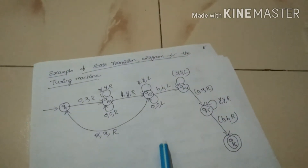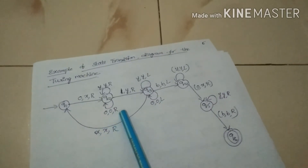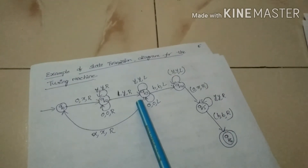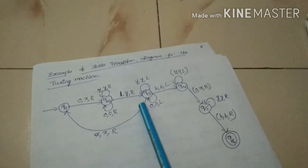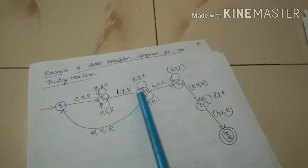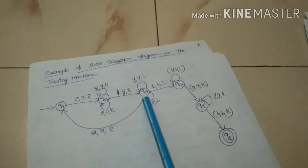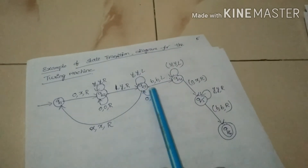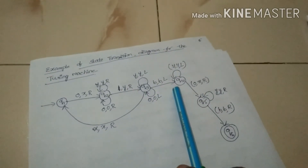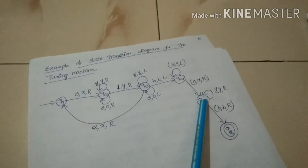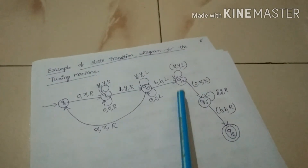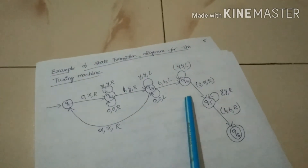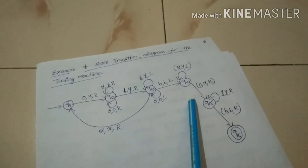The directed edge from state Q2 to Q3 with label (1, Y, R) will move the Turing machine from state Q2 to Q3. The read-write head of the Turing machine is now reading the blank symbol in state Q3. The directed edge from Q3 to Q4 with labels (B, B, L) will move the Turing machine from state Q3 to Q4, and the head position will move in the left direction. The loop at state Q4 with labels (Y, Y, L) will move the head position in the left direction.